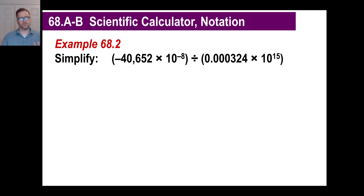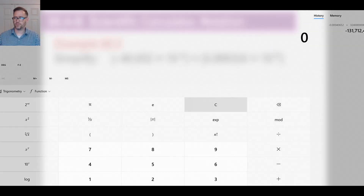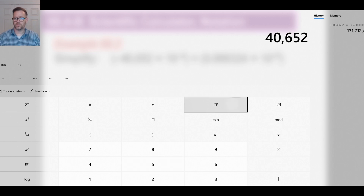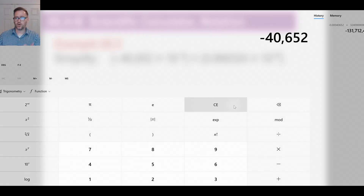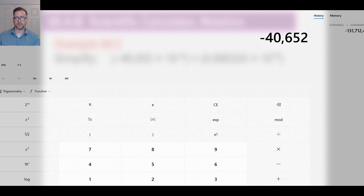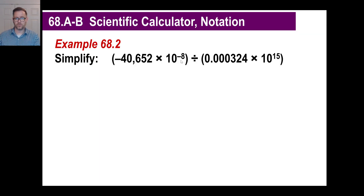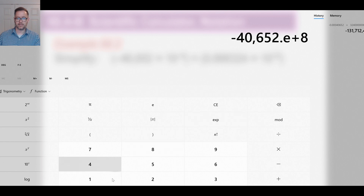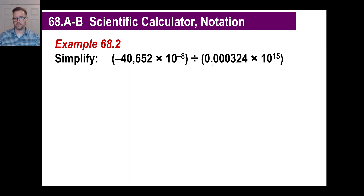Let's try another one. The main thing here is just getting the buttons down. This time we're going to divide those same two numbers. So again we have negative 40,652 — it's negative, so we're going to change the sign of that. Don't use the minus key because the calculator will think it's 40,652 minus something. Just change the sign. The power is negative 8, so push exponent, 8, then negative 8.